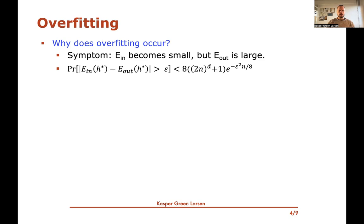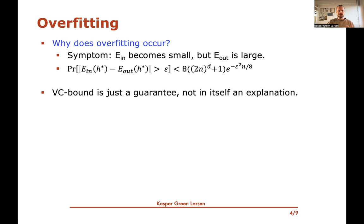We already saw the VC bound that says something about the closeness of the in-sample error and the out-sample error of the hypothesis produced. We had this generalization bound saying that the chance that these two quantities are more than epsilon apart is no more than something that goes down exponentially in epsilon squared times n, multiplied with something about n to the d, where d is the VC dimension. However, the VC dimension is just a theoretical guarantee — it tells us that if we have enough data, then we can be sure these two things are close. It doesn't say they're far apart if we don't have enough data or if the model is too complicated. So it's not really an explanation; it's just a guarantee we can make if we have enough data.